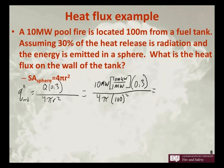So this is equal to 10 times 1,000 times 0.3 divided by parentheses 4 times pi times 100 squared, close parentheses. So this is equal to 0.24 kilowatts per meter squared.